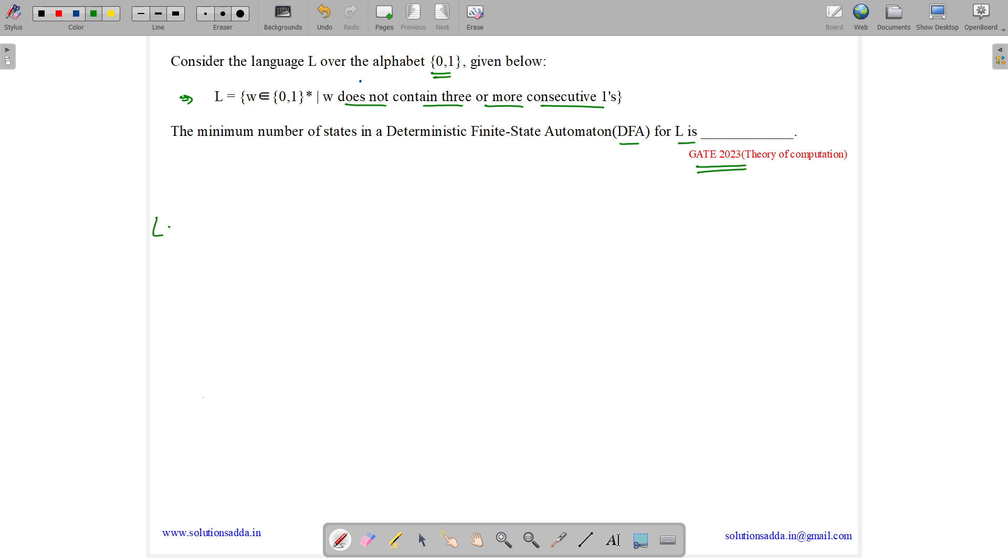Let's think about what W can be. Since W does not contain 3 or more consecutive ones, L will contain: NULL, 0, 1, 00, 01, 10, 11, and so on.